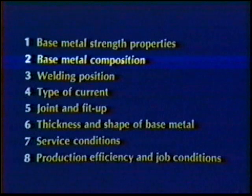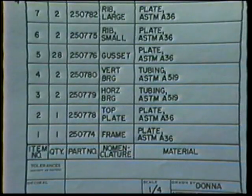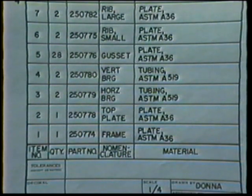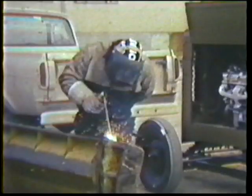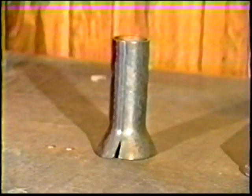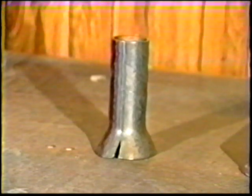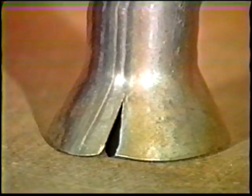Point number two is the composition of the base metal. Welding procedures, blueprints, and specifications will give the base metal type. However, under some conditions such as field repair, this may not be known. There are various tests you can make to determine the nature of the base metal and its properties with a reasonable degree of accuracy.